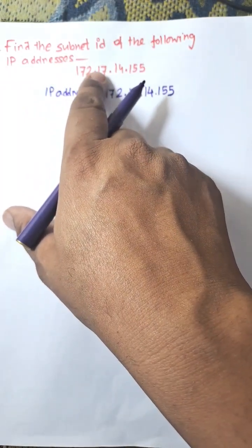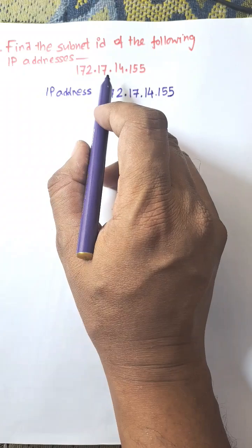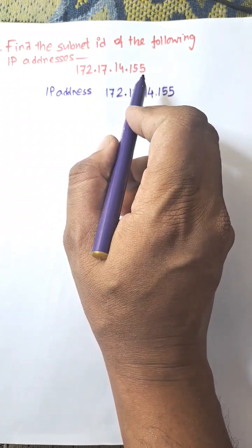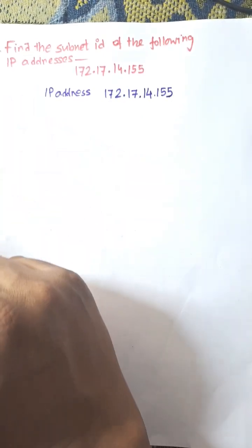I am going to find subnet ID of the following IP address. Here IP address is given 172.17.14.155. We need to find subnet ID for the following IP address. First of all we need to find the class of the IP address.